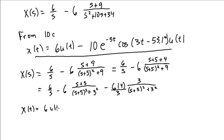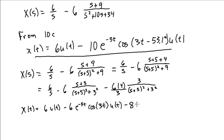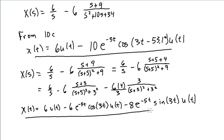The first term becomes 6u(t). Using rule 9a, I get minus 6 times e to the minus 5t cosine of 3t times u(t). Then 6 divided by 3 is 2, times 4 is 8, giving minus 8 e to the minus 5t sine of 3t times u(t), which matches rule 9b. This is the answer. It doesn't look the same as the result using 10C, but you can use trigonometric identities to show they are, in fact, identical.